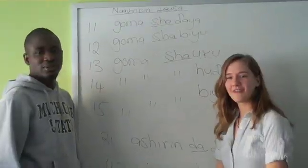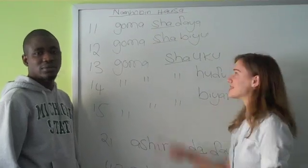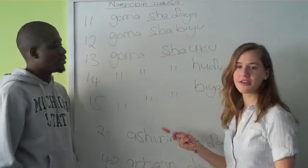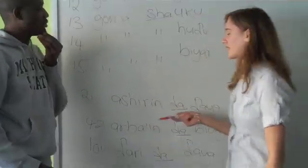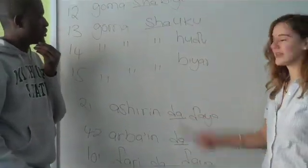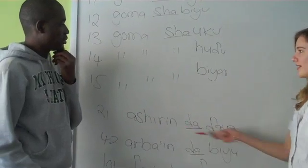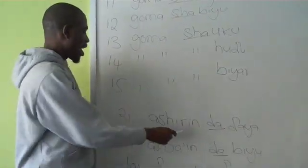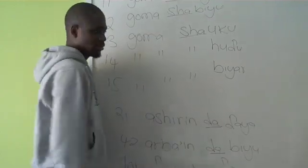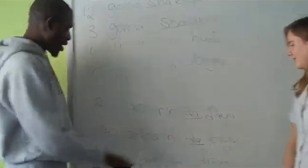When you count from 11 to 19, you use the connecting word sha. However, when you count 20 or above, you use the connecting word da from now on. For example, 21 is pronounced Ashirin da daya. And 42, Arba'in da biu.